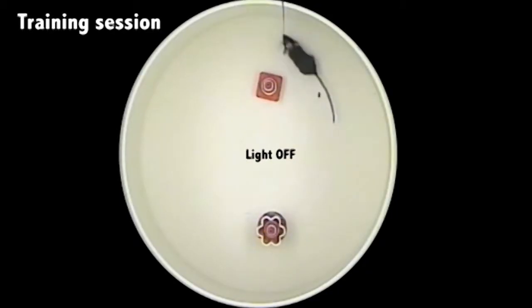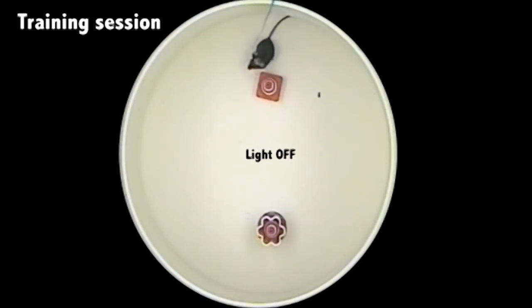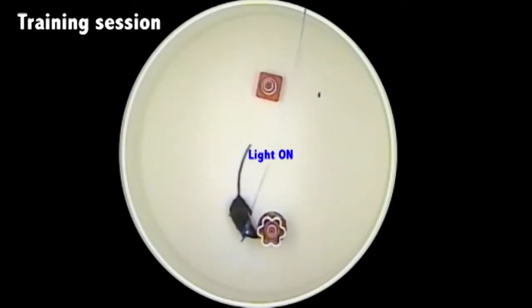To investigate the OLM cells' role in learning behaviors, we used the optogenetic approach to either stimulate or inhibit the OLM cells during learning tasks. The tasks we chose were object recognition and passive inhibitory avoidance. During the object recognition task, we have a training session where the mouse is allowed to explore two objects for 10 minutes, and during that task we stimulate or inhibit the OLM cells while they're exploring one of the objects. During testing, we replace one of the objects with a novel one, and a control mouse would explore the novel object much more than the familiar one.